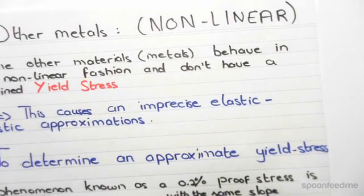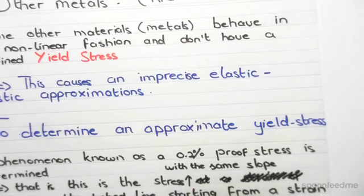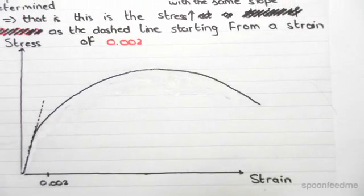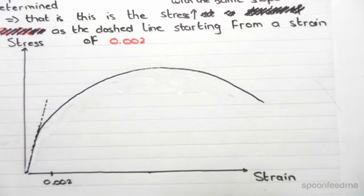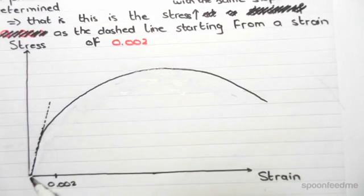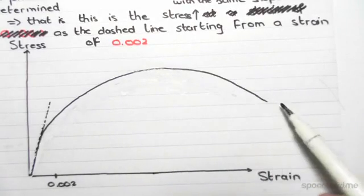So how do we do this? We incorporate something known as a proof stress. Now initially before I show you anything, this is a stress strain diagram of a nonlinear metal or any other material. So ignoring the dashed line for now, as we can see it's just a nonlinear behavior.